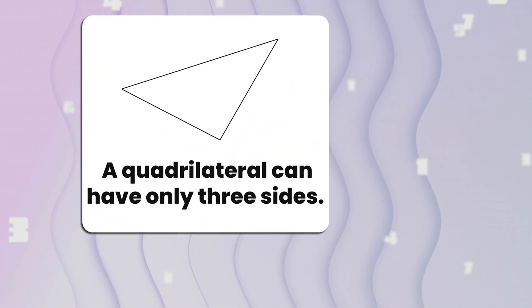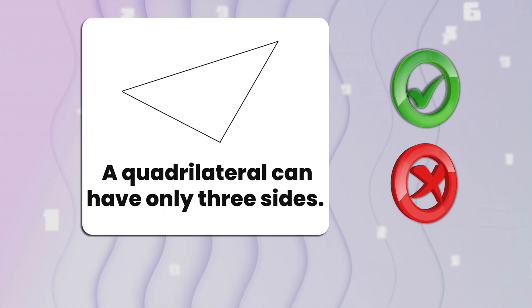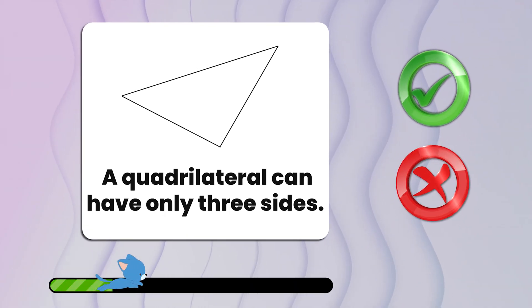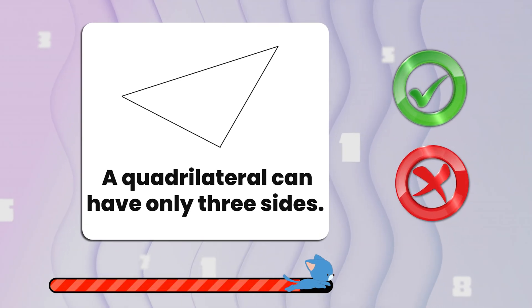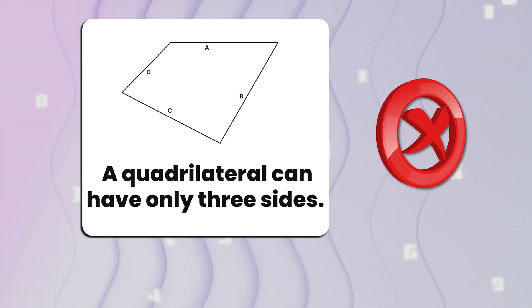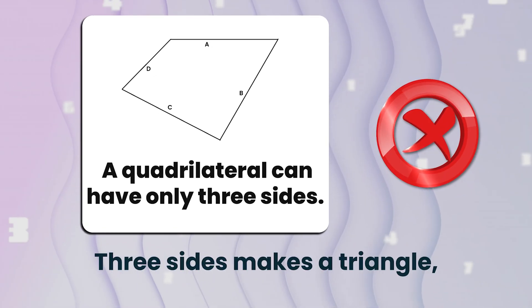Number ten. A quadrilateral can have only three sides. True or false? That's false. Three sides makes a triangle, not a quadrilateral.